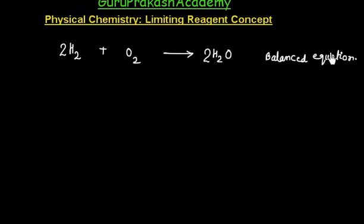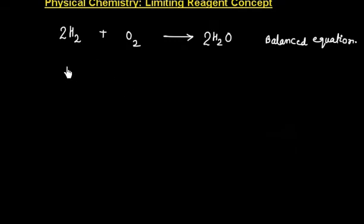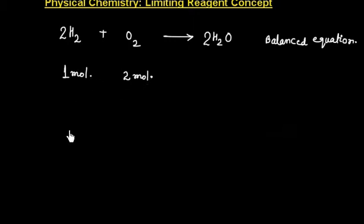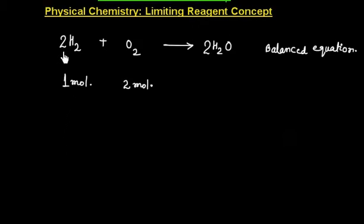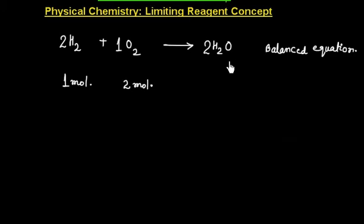Now let us say I do an experiment. If I take 1 mole of hydrogen and 2 moles of oxygen, how many moles of H₂O will be formed? From the balanced equation, 2 moles of hydrogen reacts with 1 mole of oxygen and gives 2 moles of H₂O.